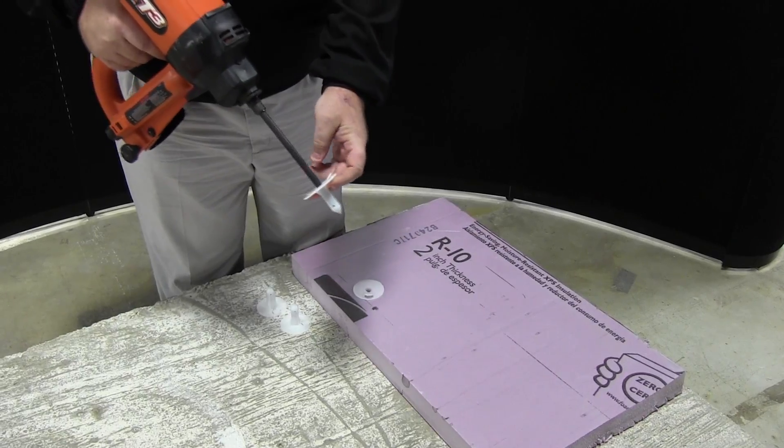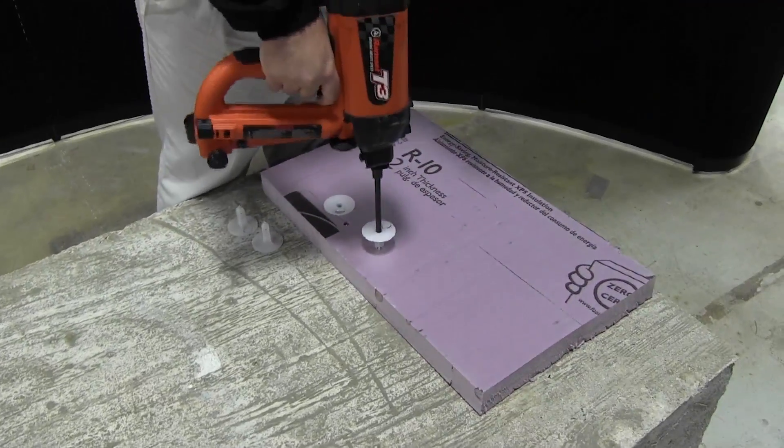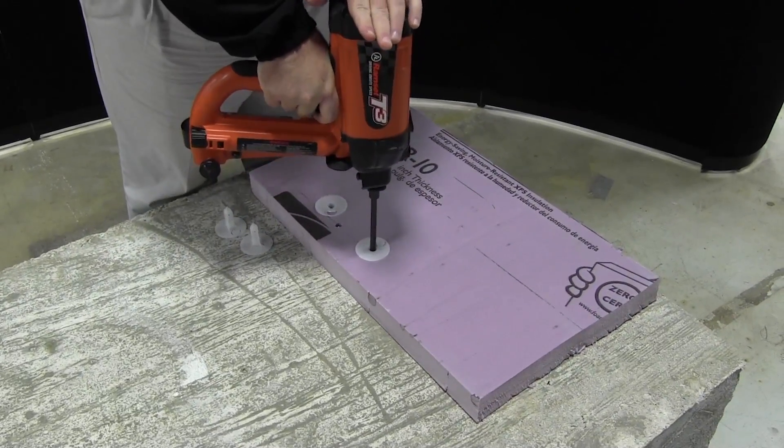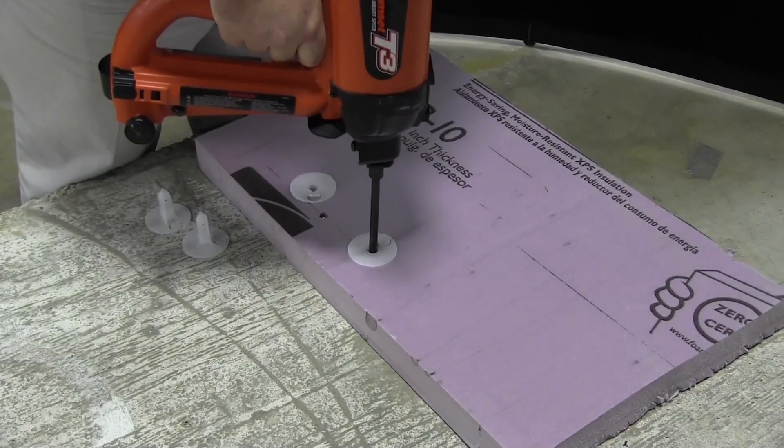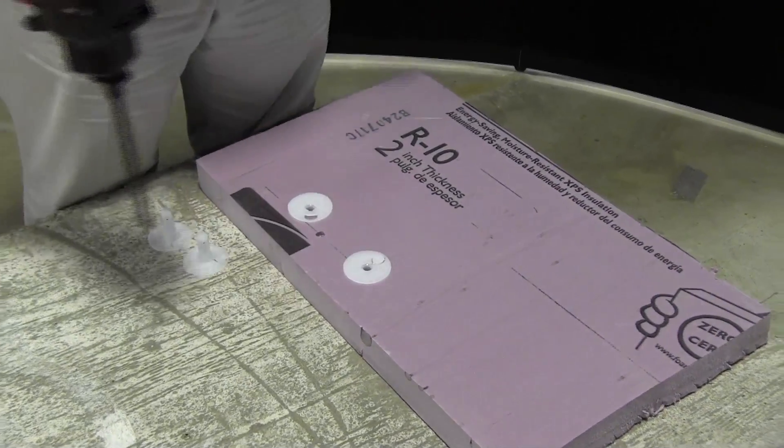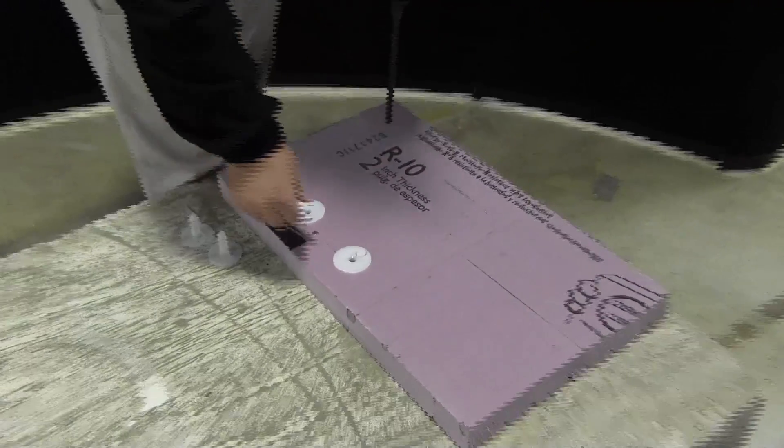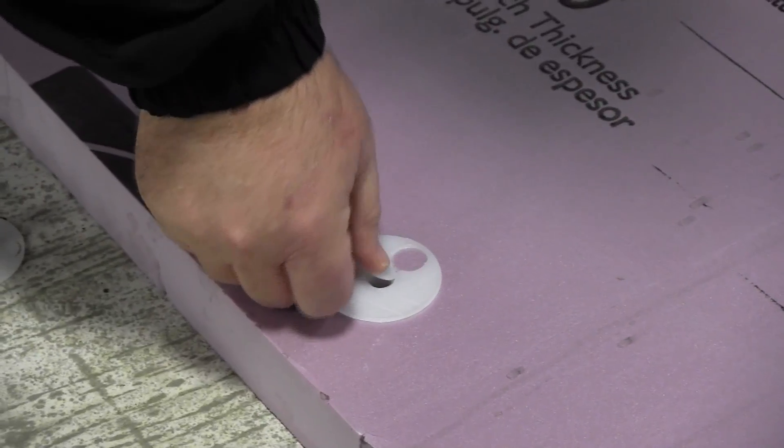The fastener goes on the end of the tool. Simply push down with your hand on the back of the tool and pull the trigger. It's now securely fastened, giving about approximately 230 to 250 pounds of pullout strength.